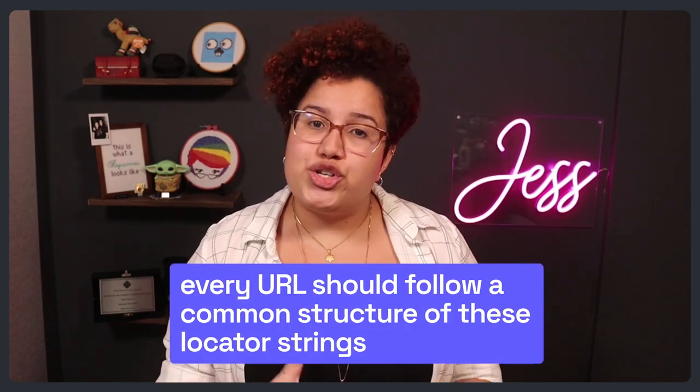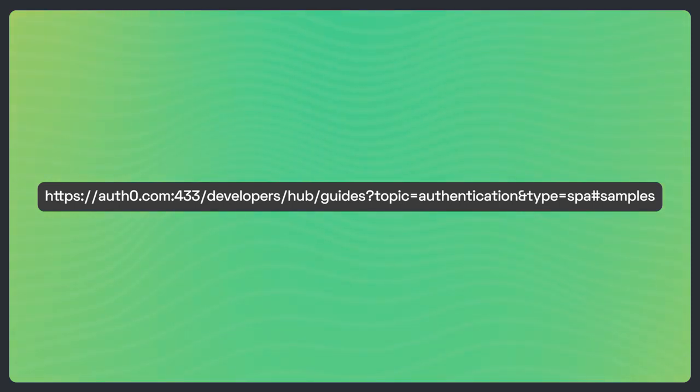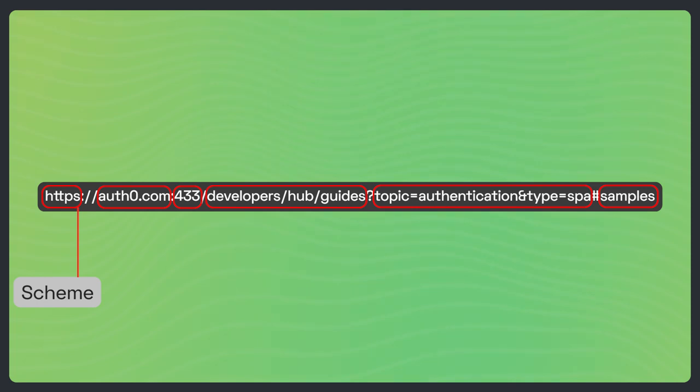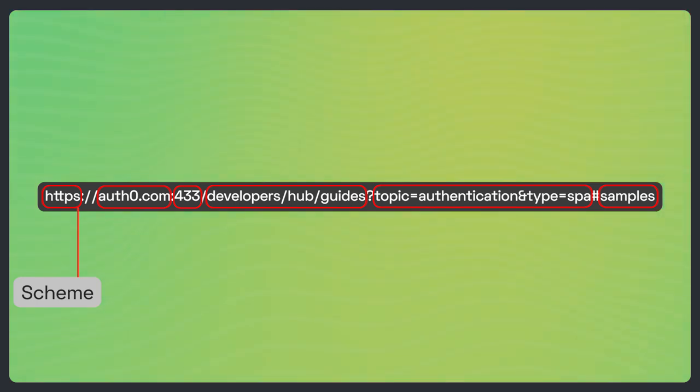If you think about what a URL is, the uniform part of the acronym tells us that every URL should follow a common structure for these locator strings. If you take a look at this image, it shows the standard structure for a given URL — in this case, a URL that represents the address of one of the samples at Auth0's developer hub. A URL consists of a few parts. The scheme is the protocol that should be used to access the resource. Beyond the well-known HTTP and HTTPS, you may use any other schemes, like FTP, SMTP, and so on. The domain is the part that indicates the server hosting the resource — it can be a domain name or an IP address.